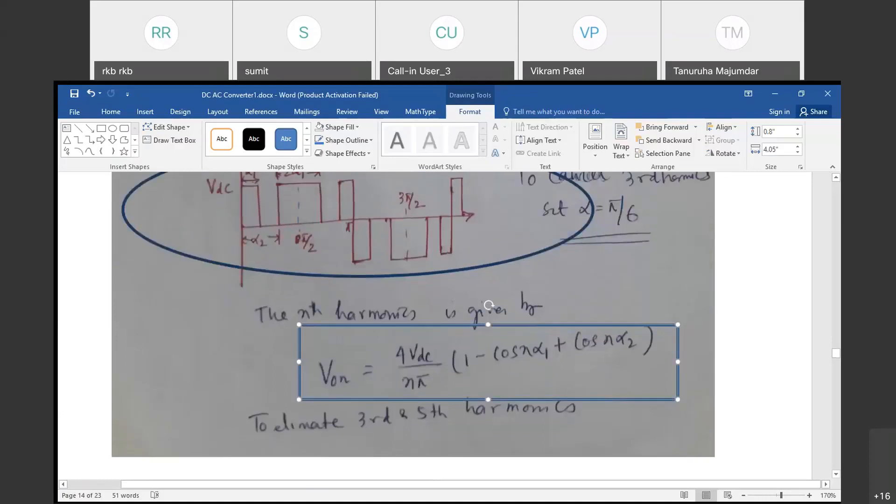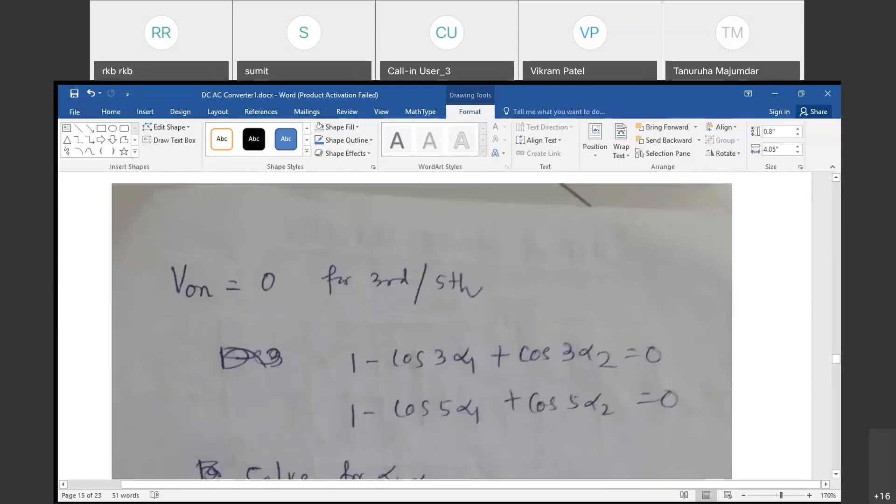To eliminate, VO5 must be equal to 0. N is equal to third, N is equal to fifth. So VO,n is 0 for third and fifth, so you got these two equations.